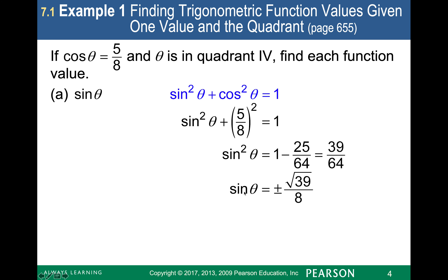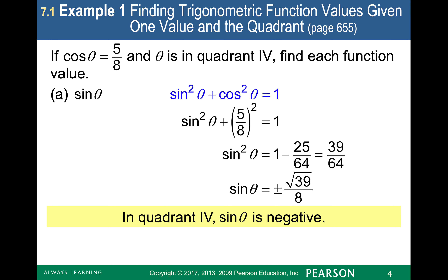I can take the square root to get sine alone, and I know it's going to be positive or negative square root of 39 over 8. Since it's in quadrant 4, the actual sine is negative. If you answer plus or minus square root of 39 over 8, it's going to be wrong because the directions say it's in quadrant 4, and sine is negative there — so you have to enter it with a negative sign.